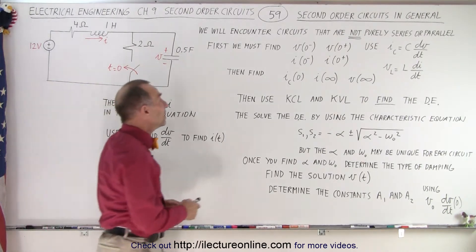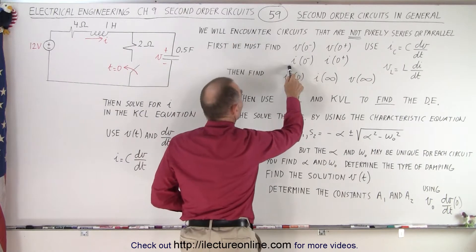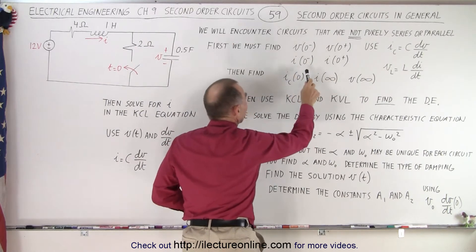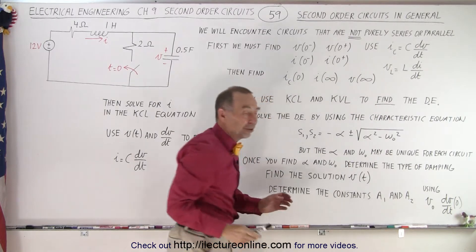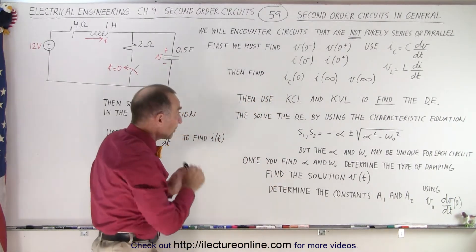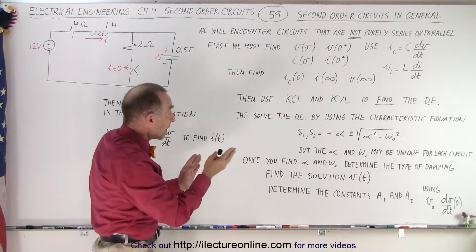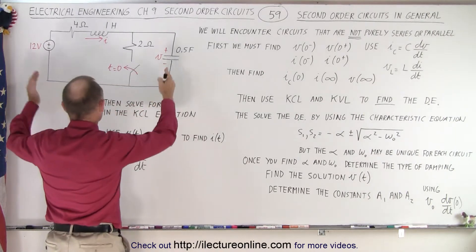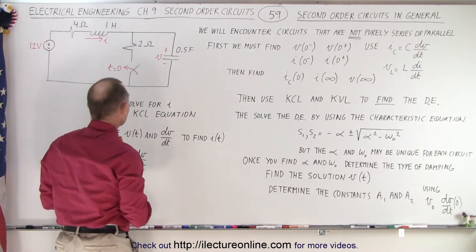First of all, we need to find the voltage and the current before time equals zero, and then find the voltage and the current after time equals zero, if there's a subtle difference between them. Typically, they're the same across that boundary, but we do have to look at the circuit, and here's an example circuit of what that might look like.